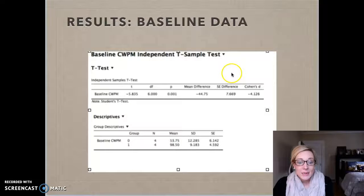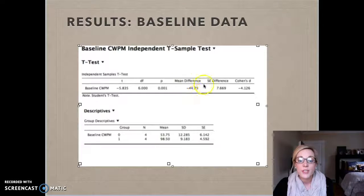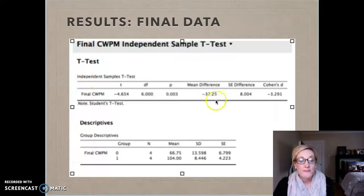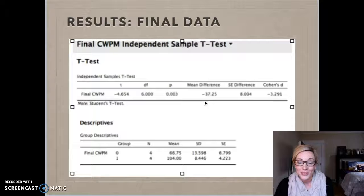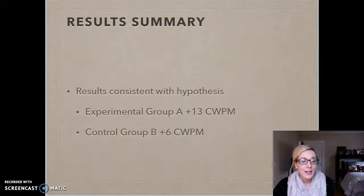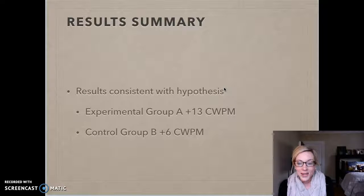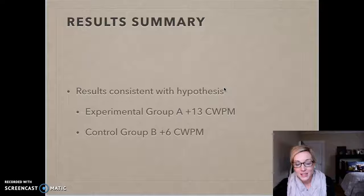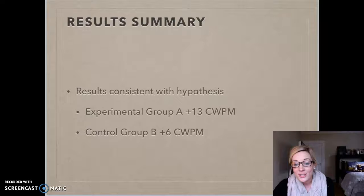I also conducted an independent sample t-test to compare the groups. At the beginning, the difference between the groups was about 45 words per minute at baseline, and at the final independent sample t-test, that difference reduced to about 37 words per minute — which is what we wanted to see. We wanted to see those groups getting closer together after the study. The results are consistent with my hypothesis that students in Group A increased their correct words per minute at a higher rate than students in Group B, and both groups were progressing, consistent with the research studied.